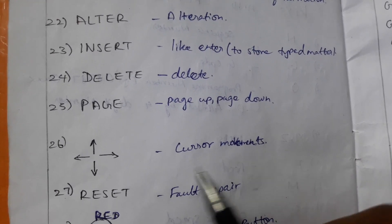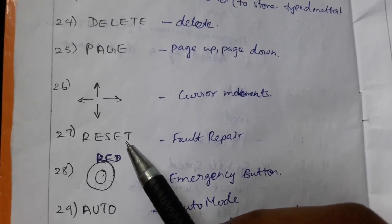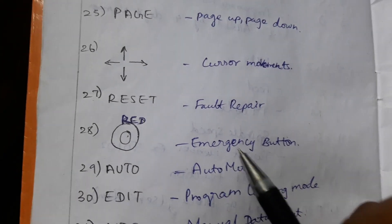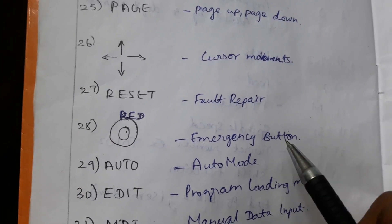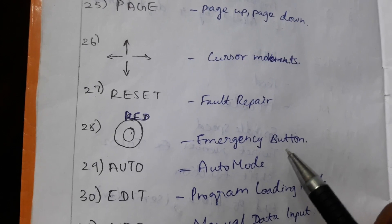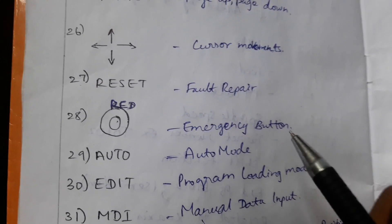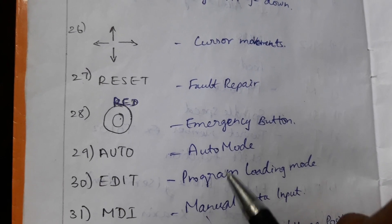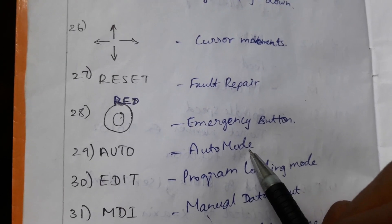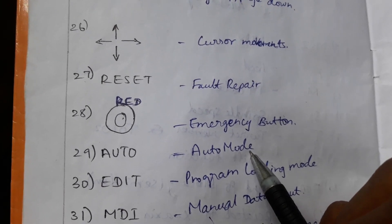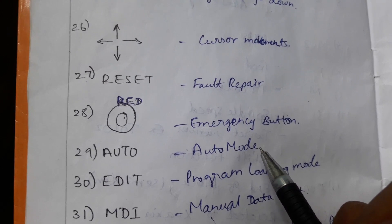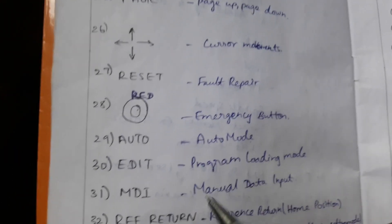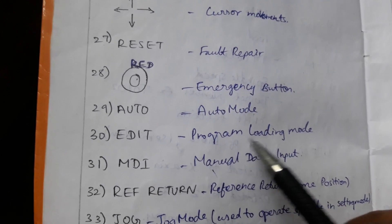PAGE up and down, cursors for cursor movements. RESET, fault or repair red button. It is the emergency button used in the CNC machine when any damage occurs to the operator or to the tool. AUTO, it is the auto mode. In this, the operations are done in automatic mode.